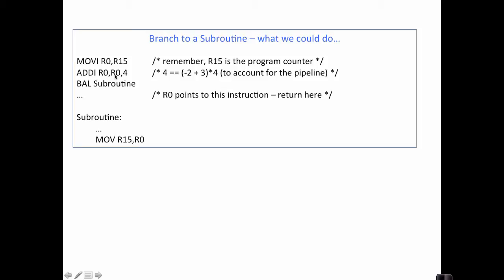So here's where the 4 comes from. Remember when we did the infinite loop? We had to branch minus 2 from our current location. That had to do with the prefetch and the pipeline. Well, if we take that minus 2, and then we figure that's where the program counter is at this point, but we have to add 1, 2, 3 instructions to get to this instruction here. So the minus 2 plus 3 gives us 1, and then each instruction is 4 bytes. So we have to multiply that 1 by 4, and that's where we get the 4 that we're going to add to register 0 here, so that when we return from our subroutine, everything works out.